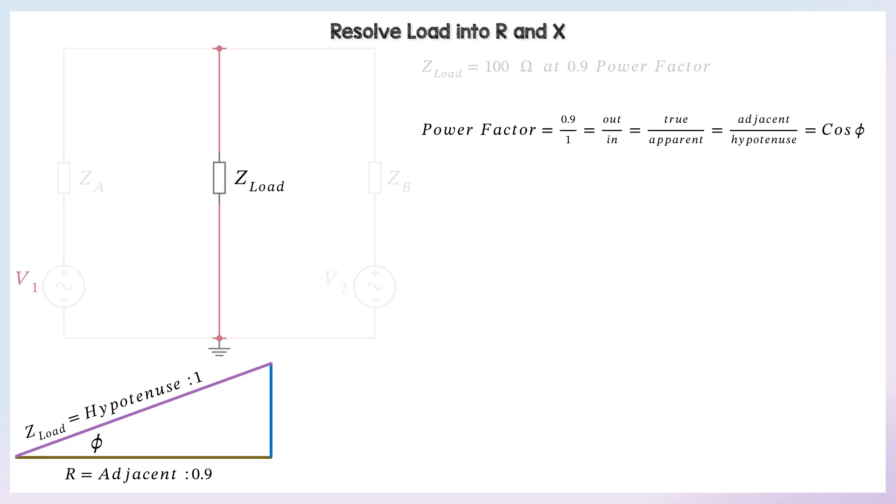So if we do arc cos or cos to the minus 1 of 0.9, we can work out the angle in between the adjacent resistive component and the overall impedance is 25.842 degrees.